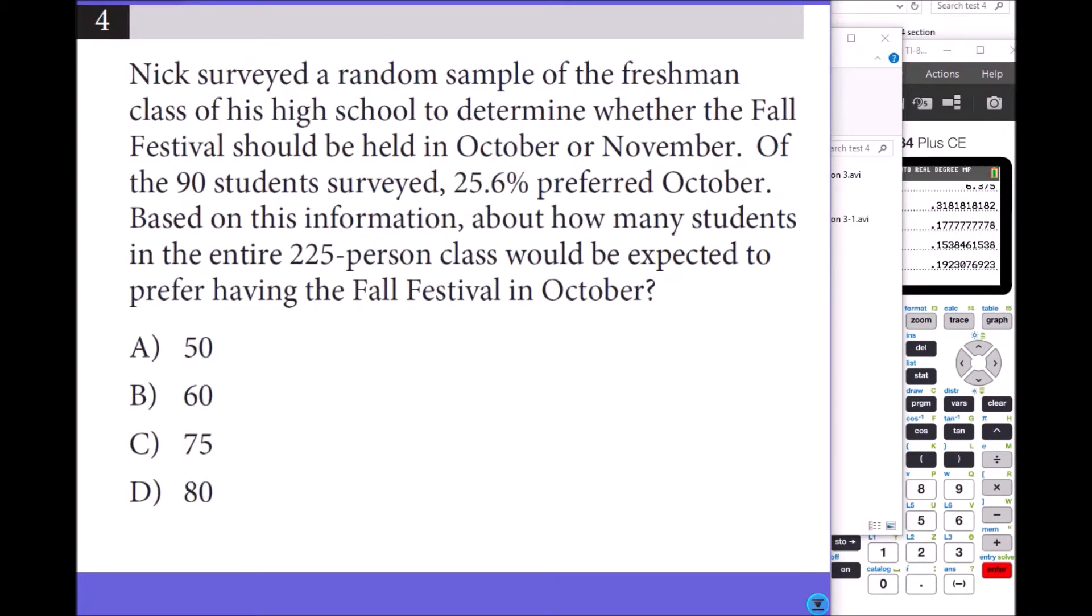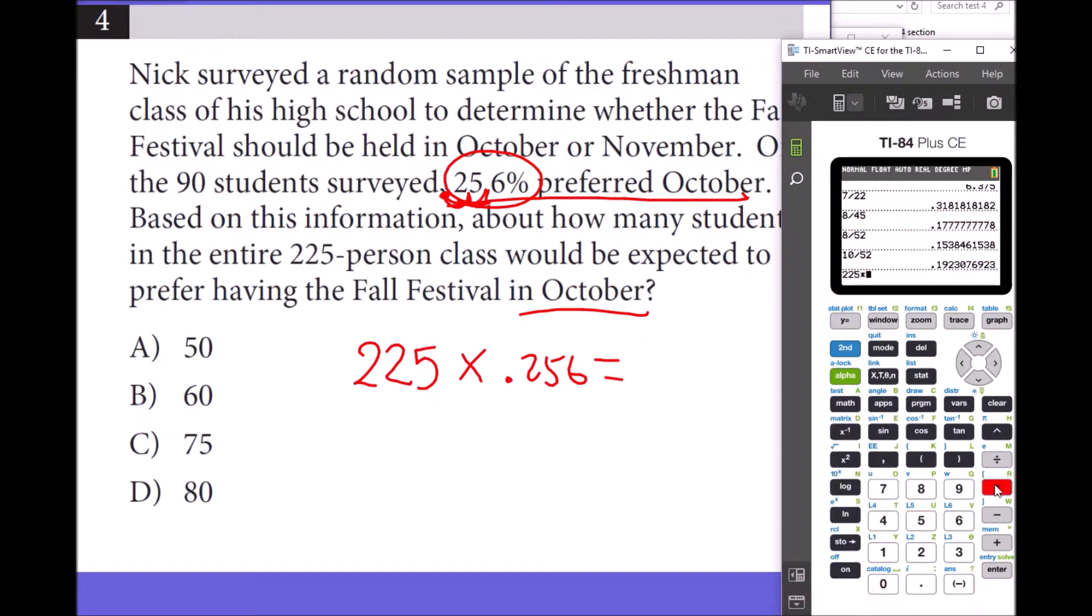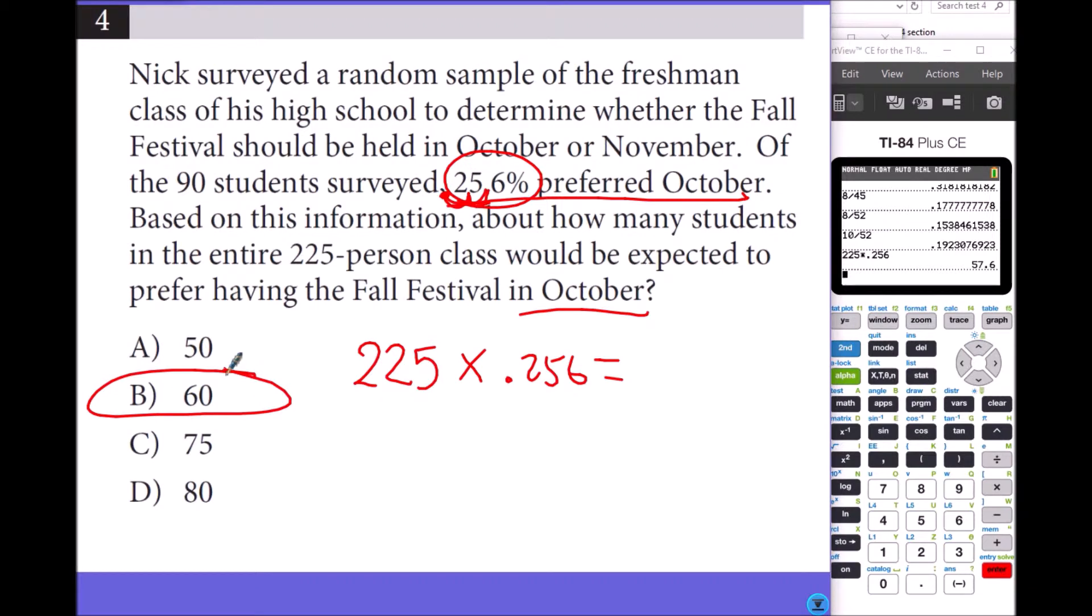Nick surveyed a random sample of the freshman class of his high school to determine whether the fall festival should be held in October or November. Of the 90 students surveyed, 25.6% preferred October. Based on this information, about how many students in the entire 225 member class will be expected to prefer having the festival in October? Same percentage goes with 225, so it's 225 times 25.6%. You multiply by the decimal 0.256. 225 times 0.256 gives you about 57, so when you round it you get 60.